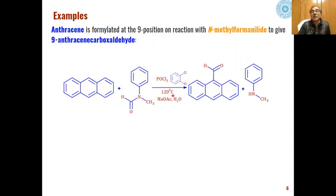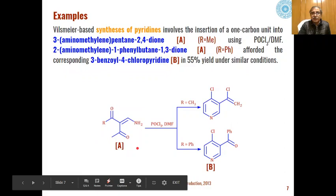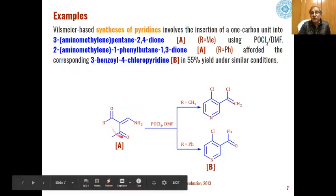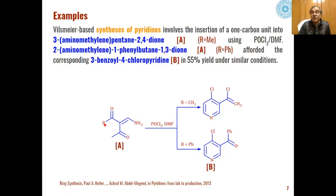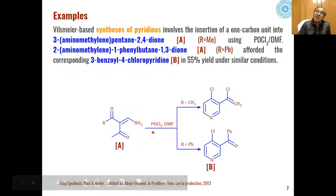Pyridines can also be synthesized through the Vilsmeier reaction. When 3-aminomethylene pentane-2,4-diones are reacted under Vilsmeier conditions, the Vilsmeier reagent forms and reacts with these diones. If R is a methyl group, pyridine systems are obtained; if R is a phenyl group, pyridine ketones are obtained as the product. The mechanism here is again the same.